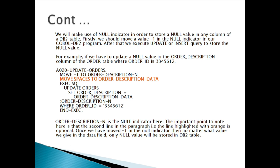ORDER_DESCRIPTION_N variable is the null indicator here. The important point to note is that the second line in the paragraph — the line highlighted in orange — is optional. Once we have moved -1 into the null indicator, no matter what value we give in the data field,